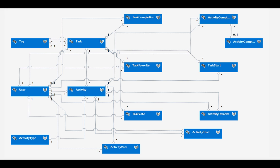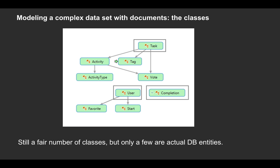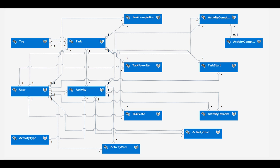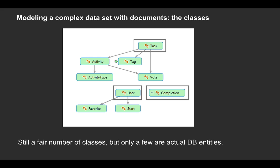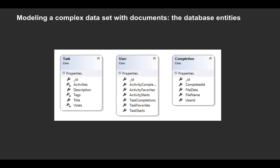So how might it look if we redesign this in a document database? What you'll see is a lot fewer top-level entities. We have a task, the task has an activity, the activity has a type and it might have a vote, and the task can also have a vote. We also have users and completions. The task, user, and completion — those are the only top-level items we manage in our database. That's three, compared to 15. Here's how this looks in MongoDB: a task contains an array of activities, the activity contains an array of votes, the task also contains an array of tags — and all this can be indexed and queried super fast. Look how much simpler it is.